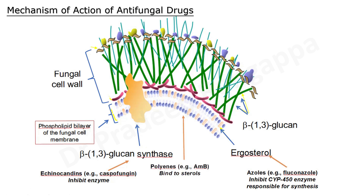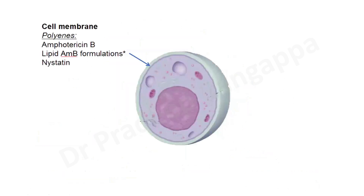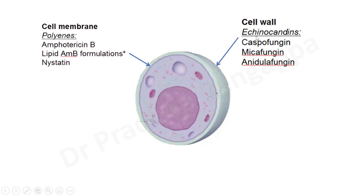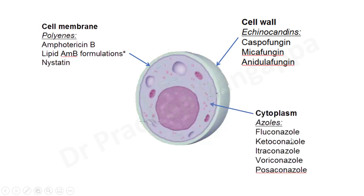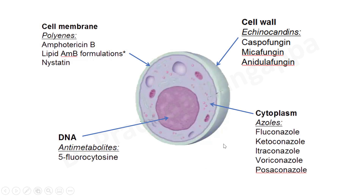Resistance to these antifungal agents — be it fluconazole, polyenes, or echinocandins — also happens due to changes in ergosterol, changes in the polyenes, and certain changes in the beta-1-glucan. In another schematic representation, polyenes act on cell membranes, echinocandins help in prevention of cell wall synthesis, azoles act in the cytoplasm area, and the anti-metabolite 5-flucytosine acts on the DNA.